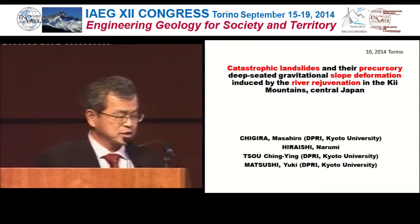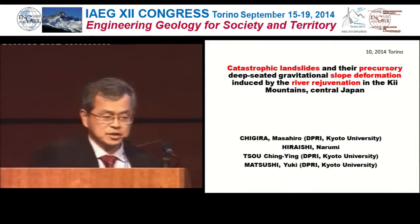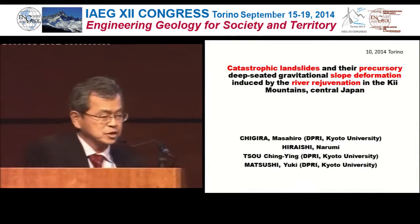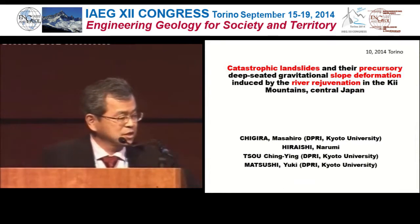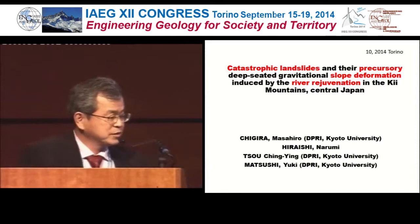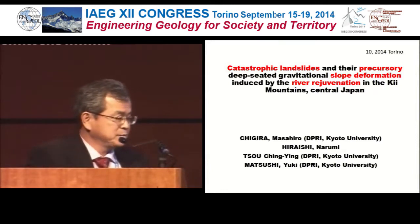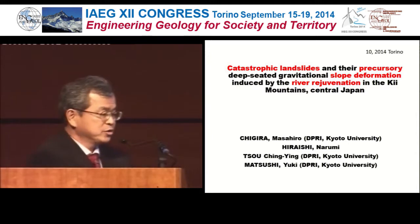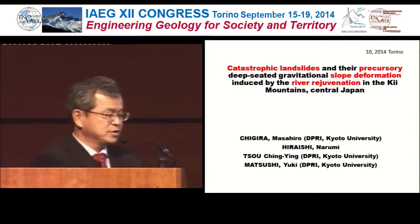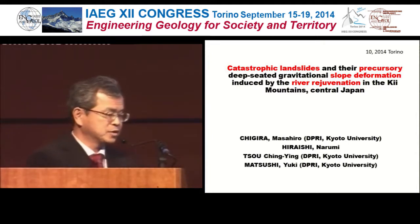My name is Masahiro Chigira from Kyoto University Disaster Prevention Research Institute. Our title is Catastrophic Landslide and Precursory Deep-Seated Gravitational Slope Deformation Induced by the River Rejuvenation in the Kii Mountains, Central Japan.